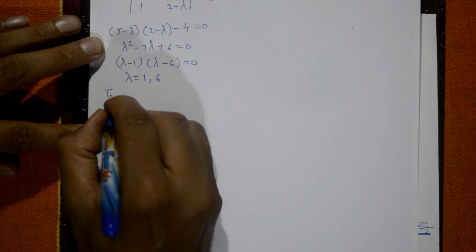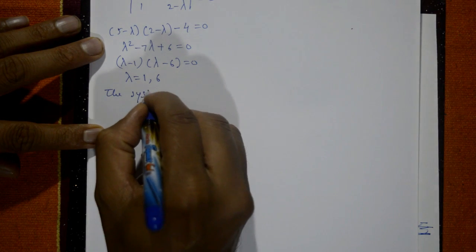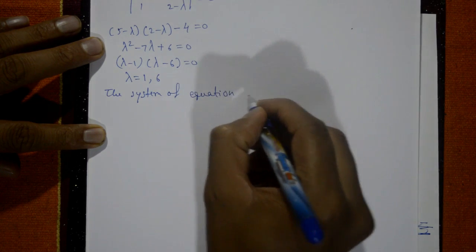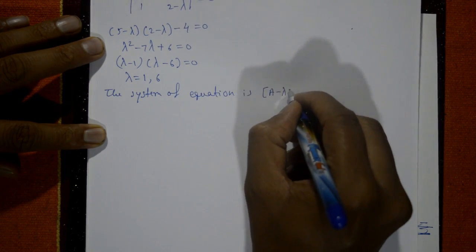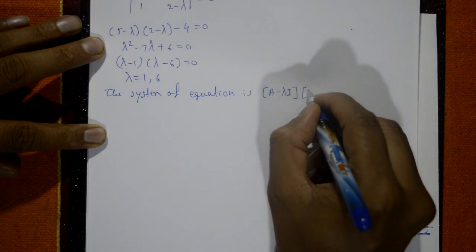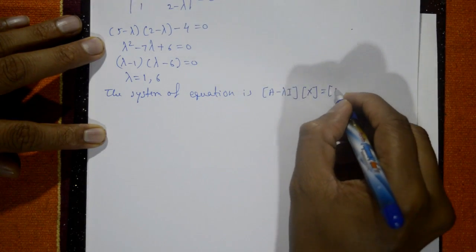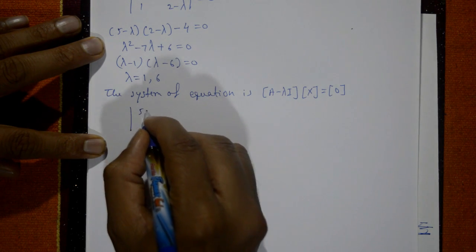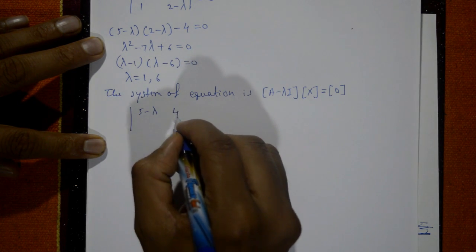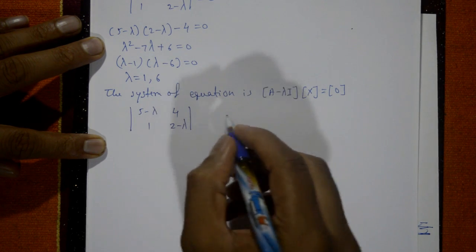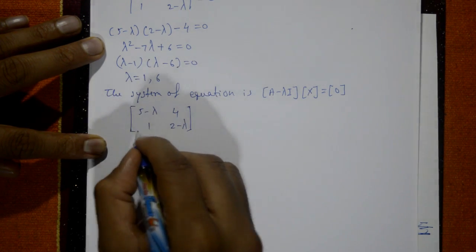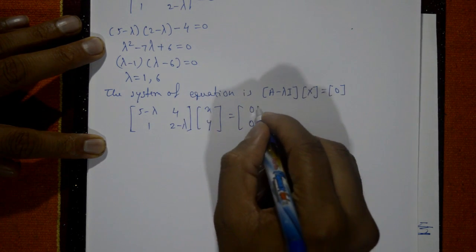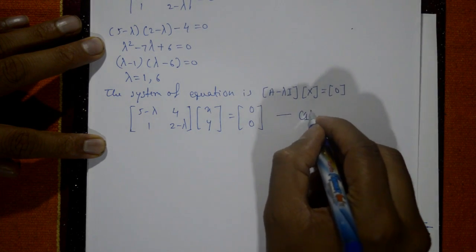Now the system of equations is (A − λI)x = 0. So A − λI means the matrix [[5−λ, 4], [1, 2−λ]] multiplied by the column matrix [x, y] equals [0, 0]. This is equation number 1.